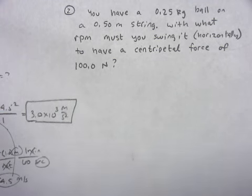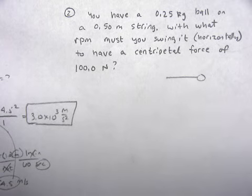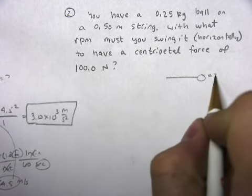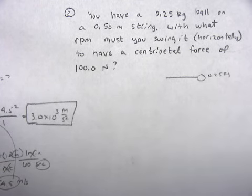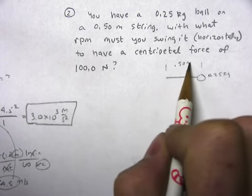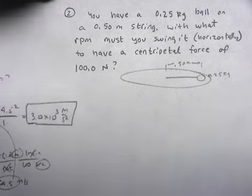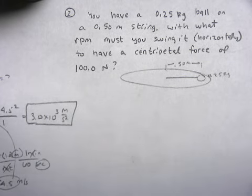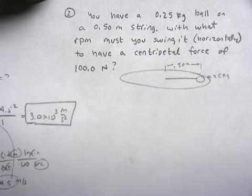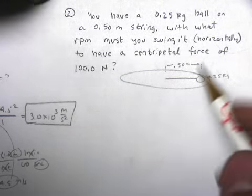Okay, number two says you've got a 0.25 kilogram ball, and it's on a 0.50 meter string, and it's swinging horizontally. Basically, how many RPMs, what speed do you have to swing it with to have a centripetal force of 100 newtons?